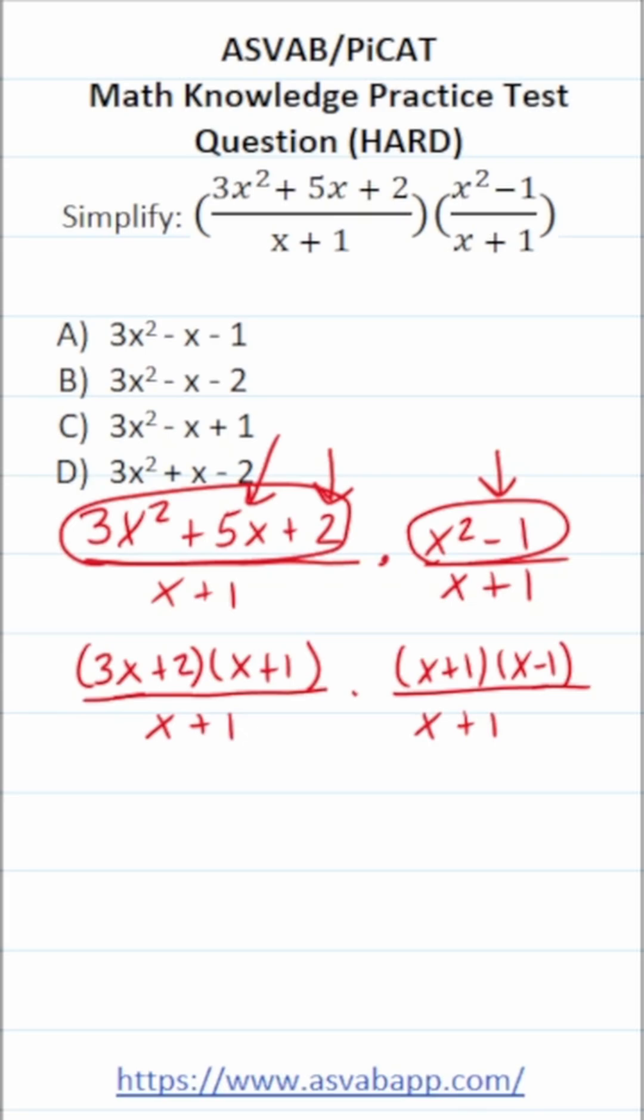2 times 1 is 2. This will become 3x times 1, which is 3x, 2 times x, which is 2x. 3x plus 2x is how we get that 5x.